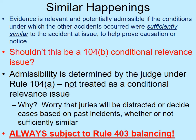One concern is that allowing jurors to determine whether the happenings should be believed might require mini-trials within trials, which would be distracting and potentially confusing. But the bigger concern is that evidence of other accidents in areas under the defendant's control might cause the jury to lose interest in the specific incident at issue and simply find against the defendant because many people have been hurt on her property or by her device. So judges are the ones who make admissibility determinations for similar act evidence using the Rule 104A scheme.